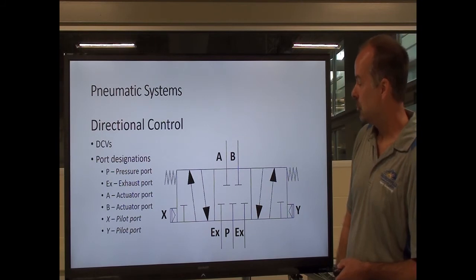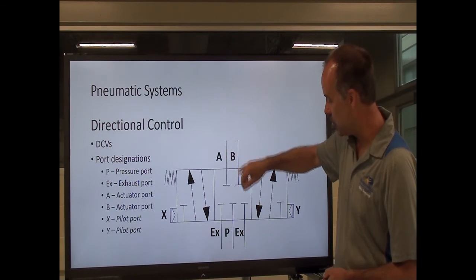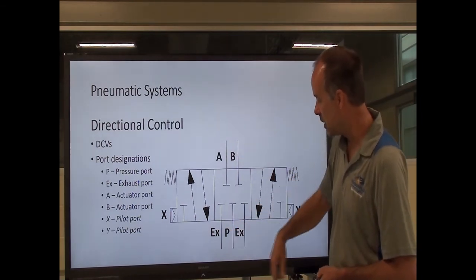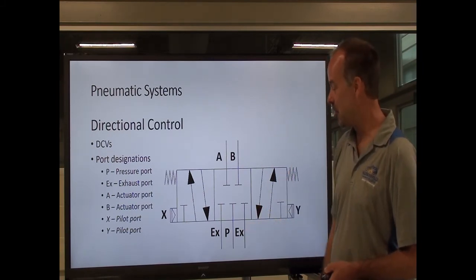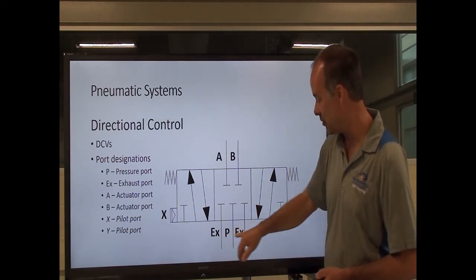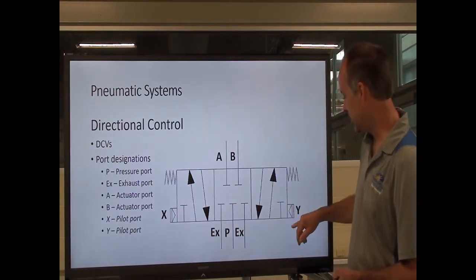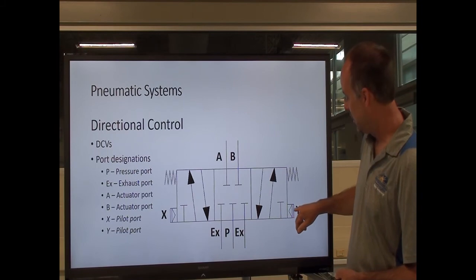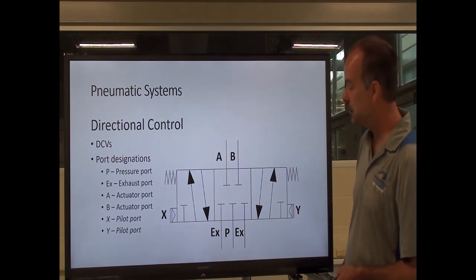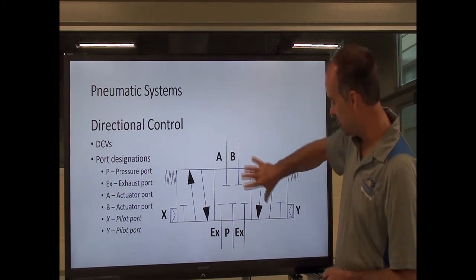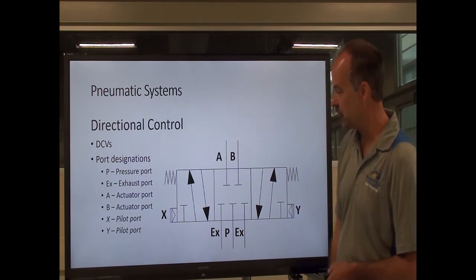For directional control symbols: one difference with pneumatic DCVs is that you still have A and B ports and a pressure port, but instead of tank ports, you don't have a reservoir to send the air back to — it's just exhausted to atmosphere. So now you have exhaust ports. You can also have pilot ports; notice that these triangles are not colored in, telling me this is a pneumatic pilot. But it's pretty much the same nomenclature with just a few minor differences.